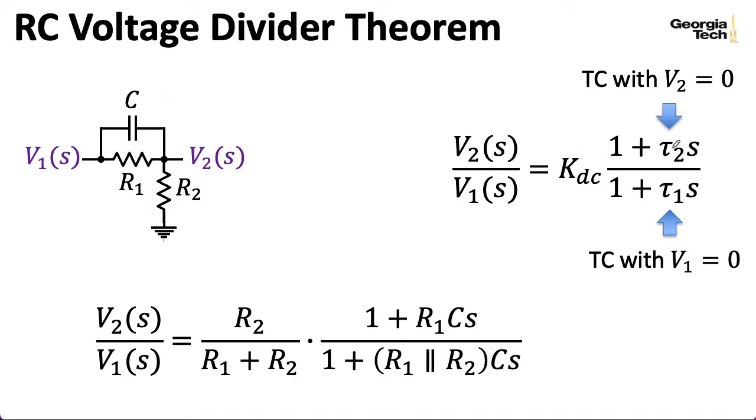So now for the time constant in the numerator, that's the time constant of this zero, if we're talking about poles and zeros, then we want to take V2 here and essentially short it to ground, so R2 gets effectively eliminated.